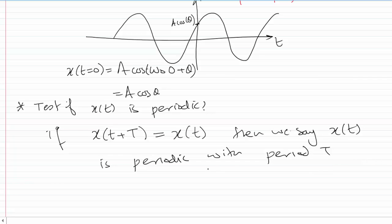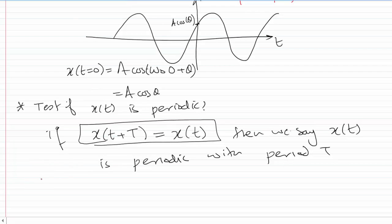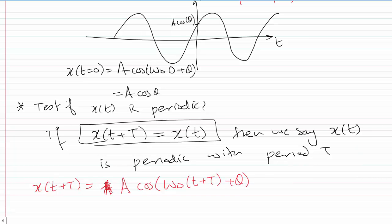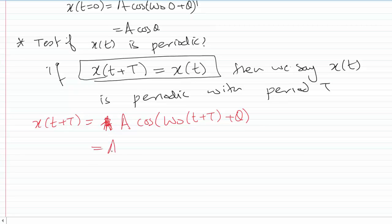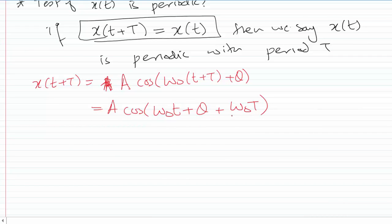If that condition is true, then we say x(t) is periodic with period T. Let's check if that equation holds for our sinusoidal. We compute x(t + T): substituting (t + T) in place of t gives A·cos(ω₀(t + T) + θ), which expands to A·cos(ω₀t + θ + ω₀T). This expression equals x(t) only if the extra term ω₀T somehow goes away.